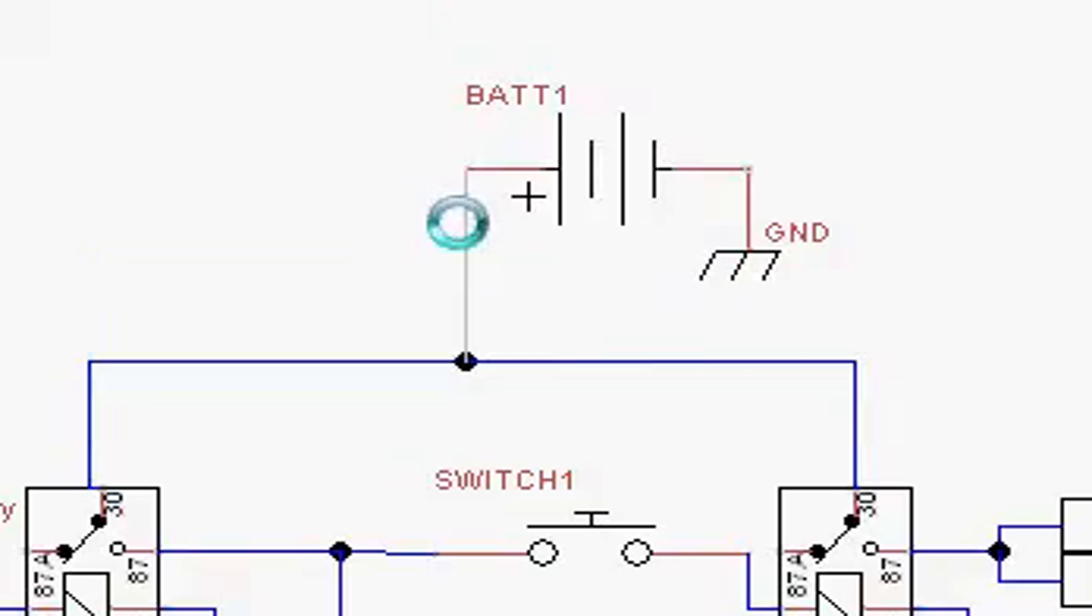The difference in this schematic is that now these relays are both powered by a constant positive power from your battery to pin 30. That's not going to charge anything because we're leaving pin 87A open on either relay, so there shouldn't be any power being drawn from the battery when everything is turned off.